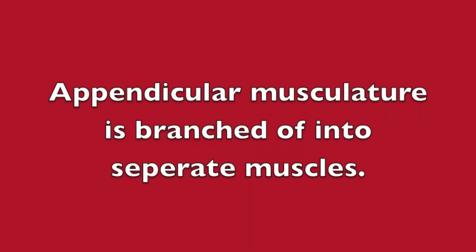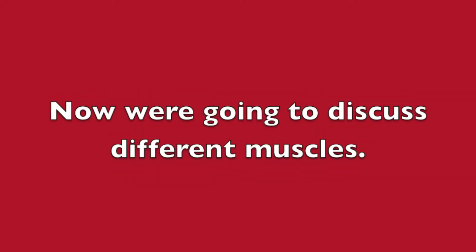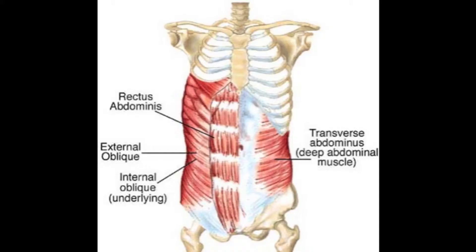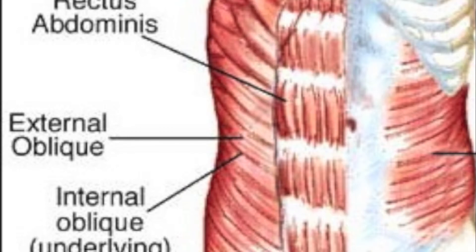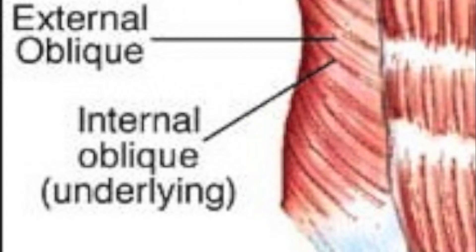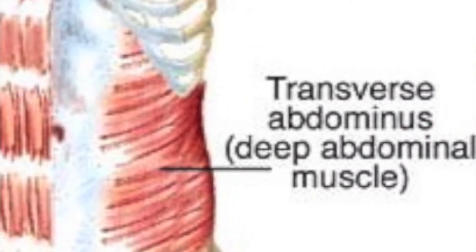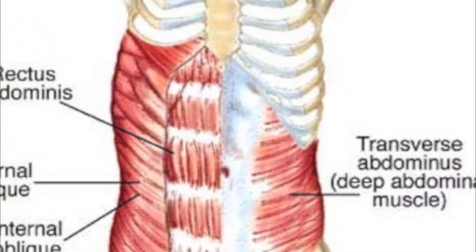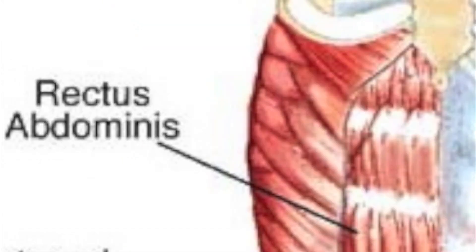Appendicular musculature is branched off into separate muscles. Now we're going to discuss different muscles. First, we'll start off with the muscles that make up the core. There are the external obliques, the internal obliques, the transverse obliques, and the rectus abdominis.